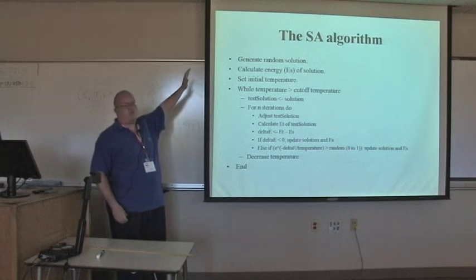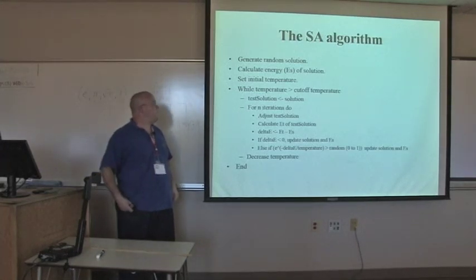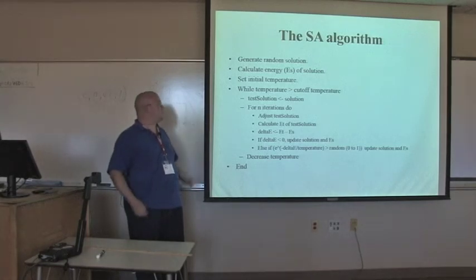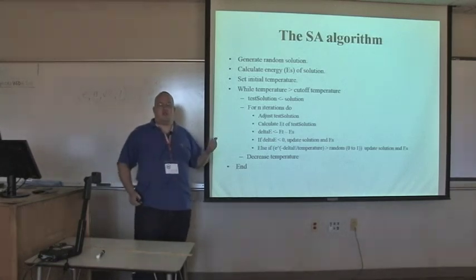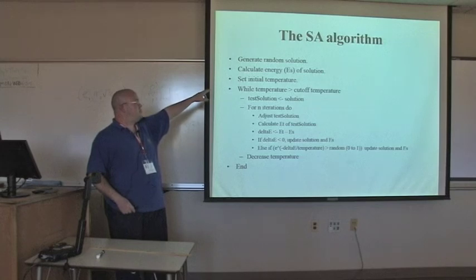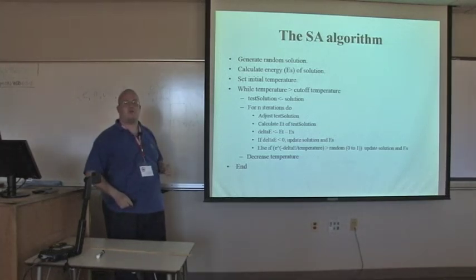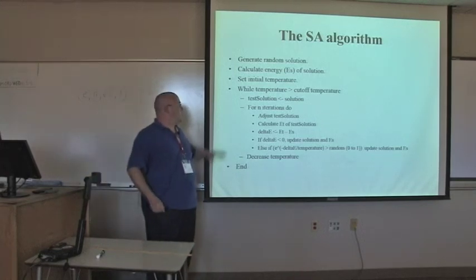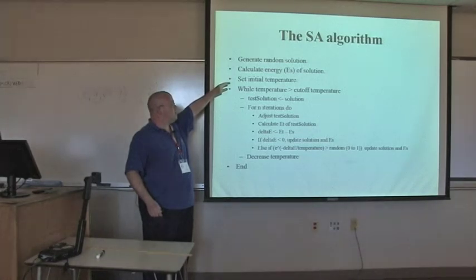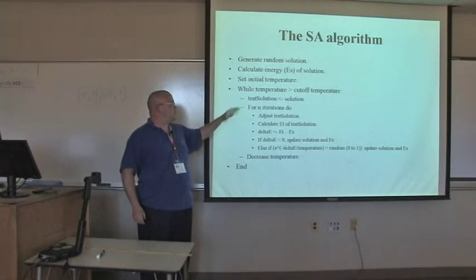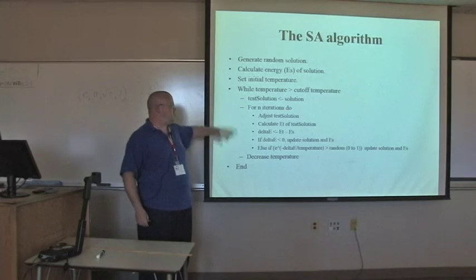OK, here's sort of a generic form of the simulated annealing algorithm. And the first thing we do is we just generate a random solution. Our starting solution is arbitrary. It doesn't matter. We just need one. We just calculate the energy of that solution. And of course, the way you calculate that is going to vary depending on the type of problem you're working with. Set an initial temperature. And if I have time, I'll go into some of the problems with selecting a lot of these starting parameters because there are some issues with it and it varies so much by the problem you're working with. But we'll save that for later if there's time. But we'll pick some starting temperature that's sufficiently high to allow our search to work properly. And then basically, we just gradually reduce that temperature towards a cutoff temperature. And until we reach that cutoff temperature, we're just going to keep running through this loop.